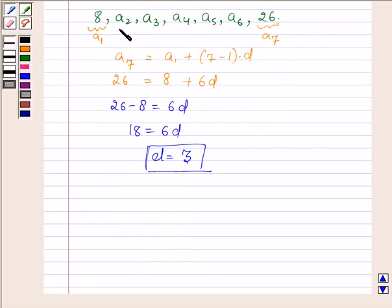Now let us find the numbers which are inserted between 8 and 26, one by one. So the first number is A2. Its formula is A1 plus 2 minus 1 into D. So 8 plus D, that is 3, is equal to 11.